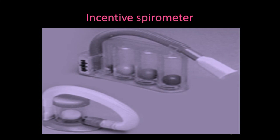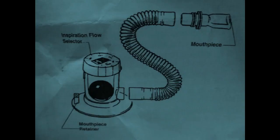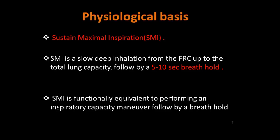In this image you can see the incentive spirometer device with a mouthpiece, mouthpiece retainer, and inspiration flow selector. The physiological basis of the incentive spirometer is the basic maneuver called Sustained Maximal Inspiration (SMI). SMI is a slow deep inhalation from the FRC — Functional Residual Capacity — up to the TLC, Total Lung Capacity.